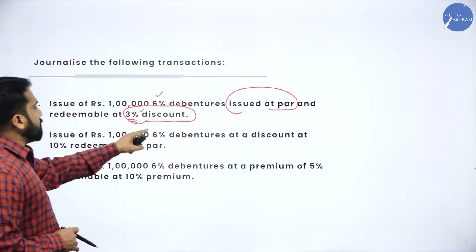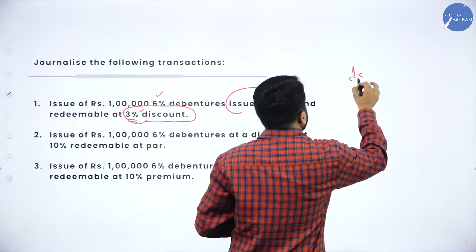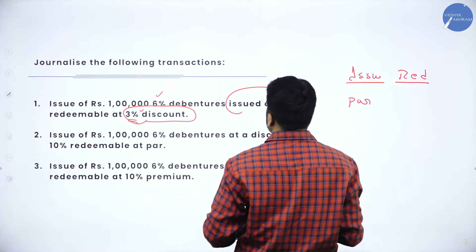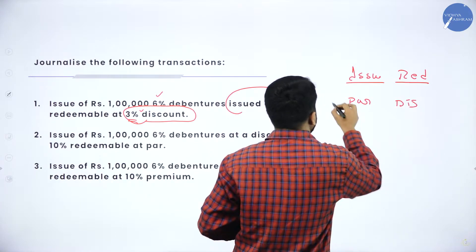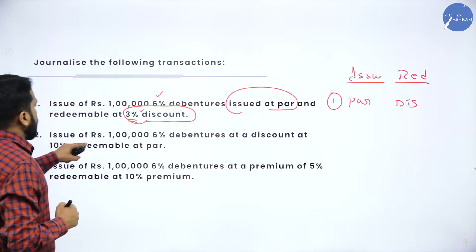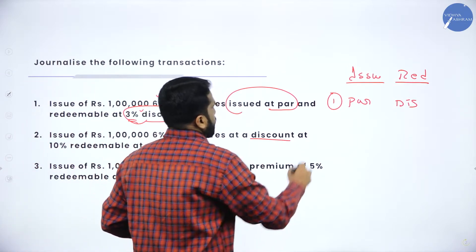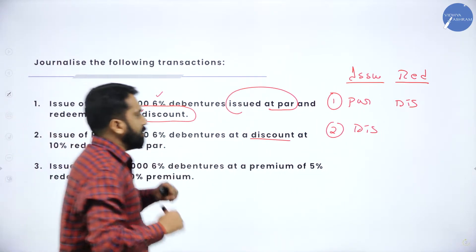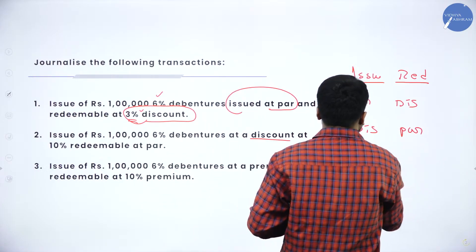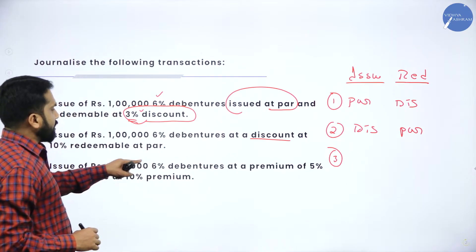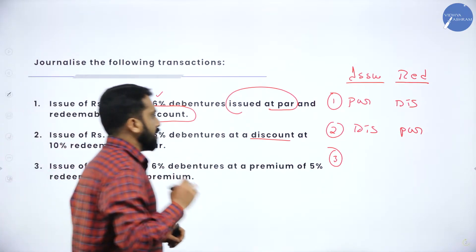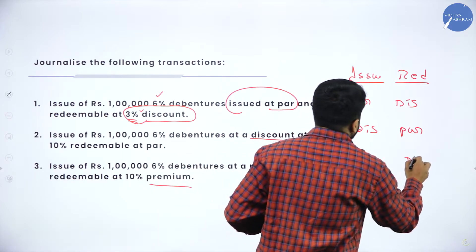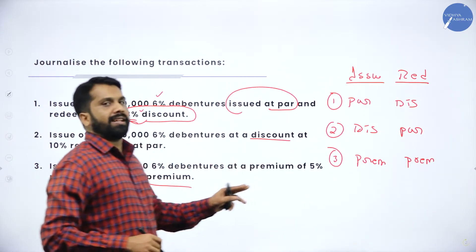Issued at par, redeemable at discount — this will be your issue and this will be your redemption. Now, bank to debenture, debenture to bank — simple, if it is par and par. But in this you have discount also: to profit on redemption of debenture. This will be your journal entry for the first one. The value is one lakh. What is the discount? Three percent. Three percent on one lakh is three thousand. One lakh minus three thousand — your answer is 97,000.